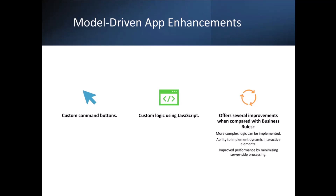That JavaScript could be doing a whole variety of things — talking to other third-party systems, executing some logic — anything that you can do within JavaScript you can have execute on click of a custom command button. You can also run custom logic using JavaScript on events that happen in a model-driven app, such as on form load and on form save — you can write some JavaScript and it'll execute on those events.